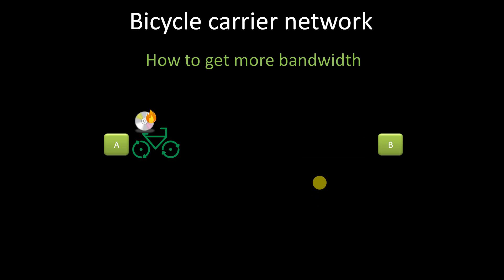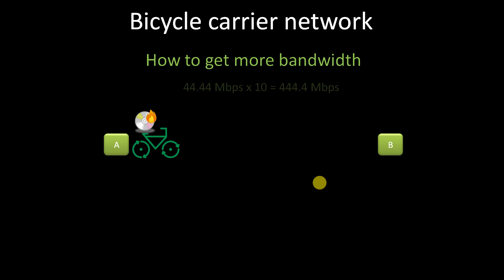But what if we want faster, more bandwidth? We can either ask the rider to go faster, or we can ask the rider to carry more DVDs per trip. Let's say riding faster isn't feasible, so we'll ask the rider to carry 10 DVDs on each trip. This effectively increases our bandwidth tenfold — from 44.4 megabits per second to 444 megabits per second — even though our latency stayed the same.